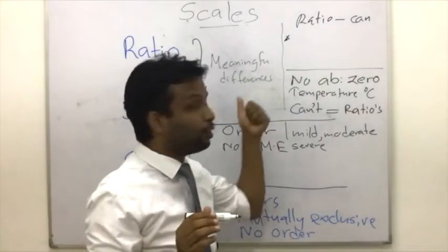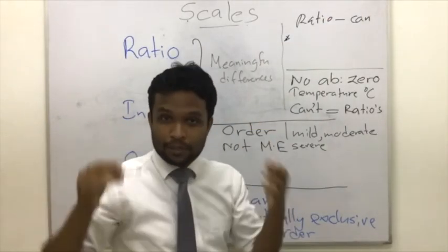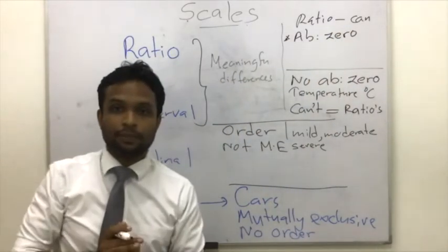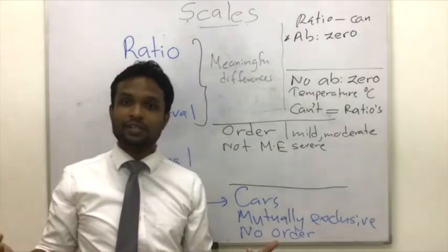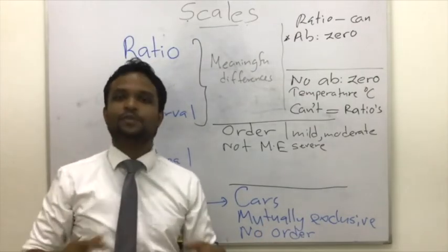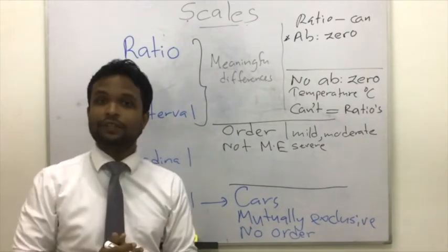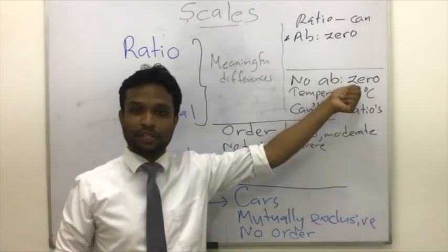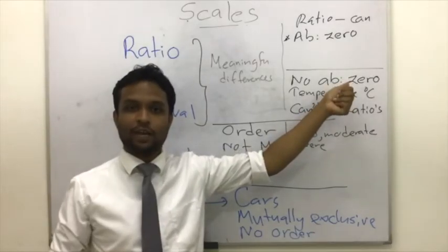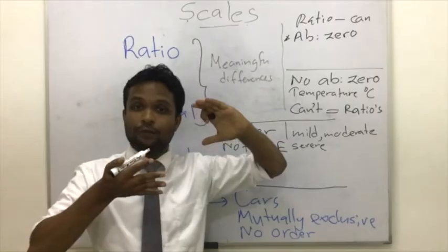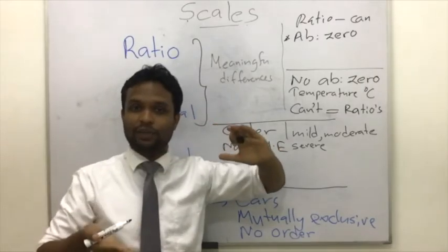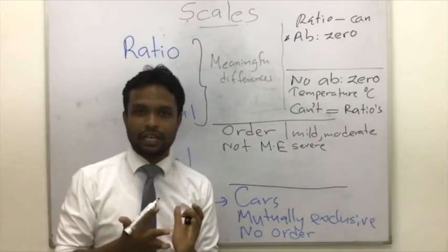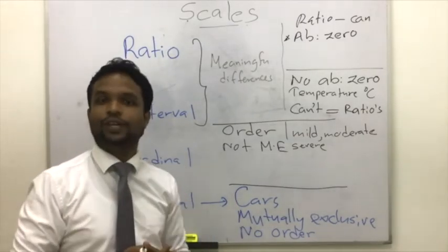Ratio scale, importantly, has an absolute zero. For example, height of zero means no height; weight of zero means no weight. Another identifying feature is that in interval scales, since zero is not absolute, we can have negative values. If a variable has negative values and is a continuous distribution, we can identify it as an interval variable.